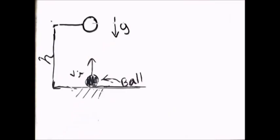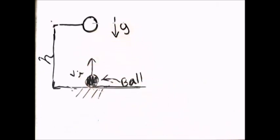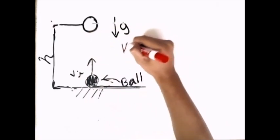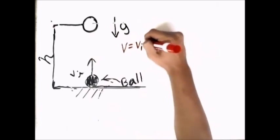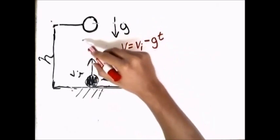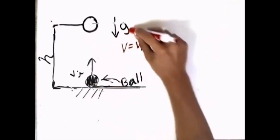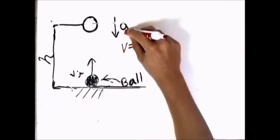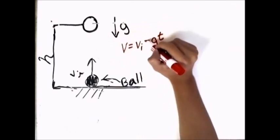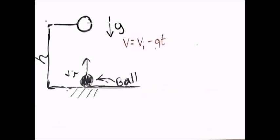Now we're going to get into the formulas. The first formula we'll use is to find the ball's velocity at any point. The formula is: v equals v-initial minus g times t. Here, v is the ball's velocity at a given point, v-initial is the initial velocity, g is the force of gravity at 9.8 meters per second squared — and since gravity acts opposite to the throw we use minus — and t is time.